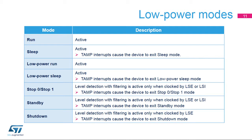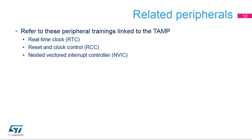In stop 0, stop 1, and standby modes, only the LSE or LSI clocks can be used to clock the TAMP. Only the LSE is functional in shutdown mode. This is a list of peripherals related to the real-time clock. Please refer to these peripheral trainings for more information if needed: Real-time clock, Reset and clock control, and Nested Vectored Interrupt Controller.